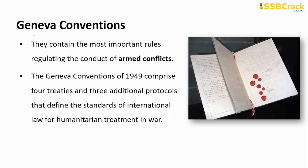These conventions contain important rules regarding the conduct of armed conflict. If armed conflict occurs anywhere in the world, certain rules must be followed. The Geneva Convention of 1949 comprises four treaties and three additional protocols, and they define the standards of international law for humanitarian treatment in war.